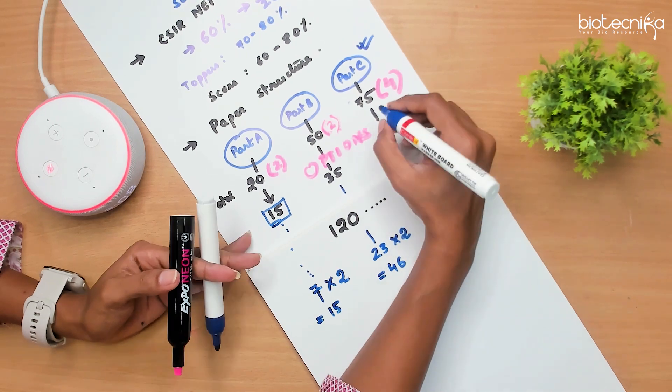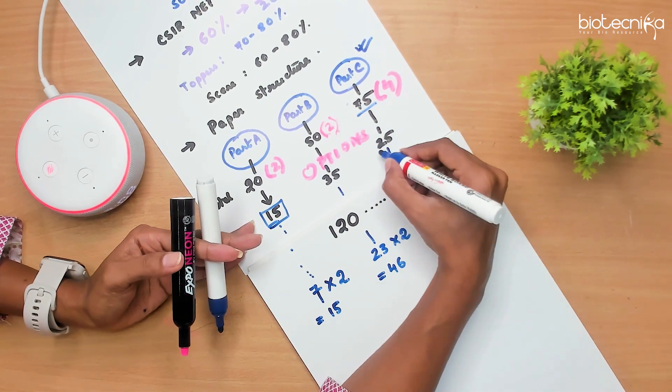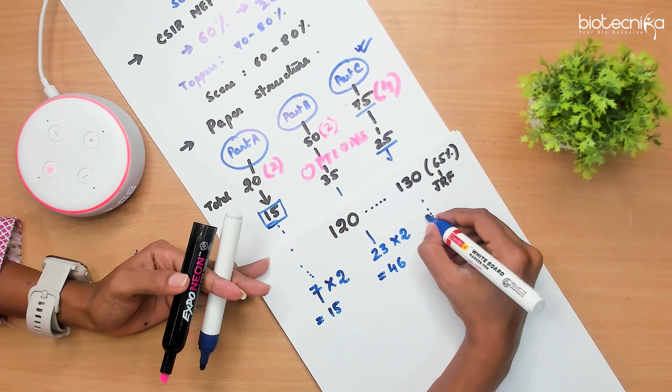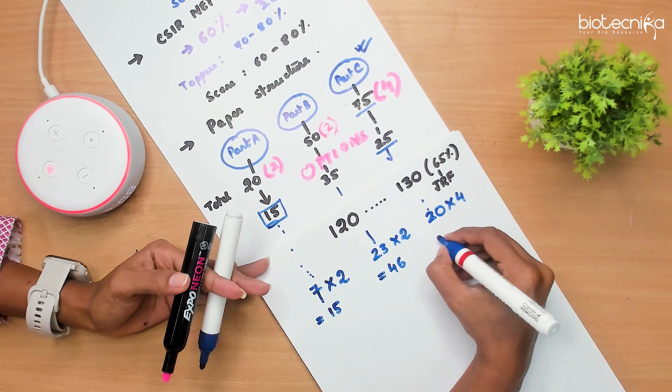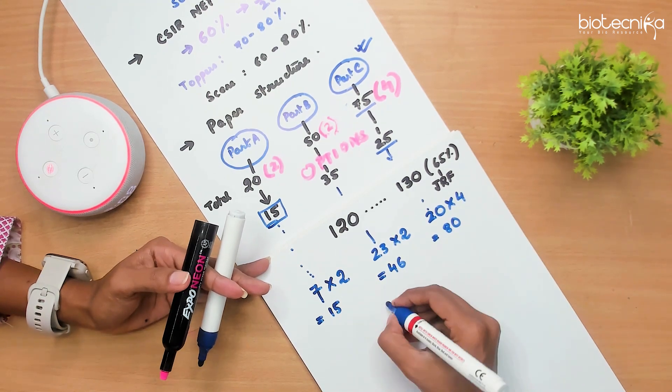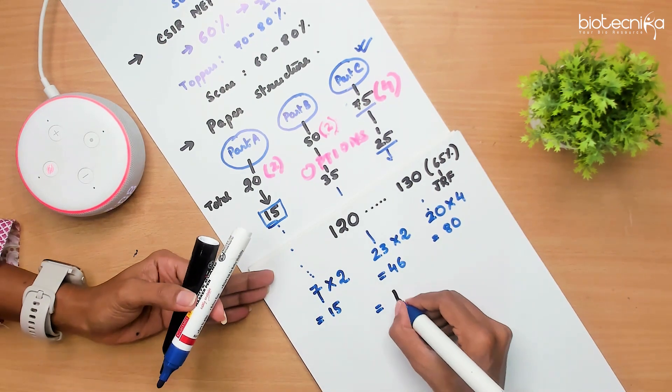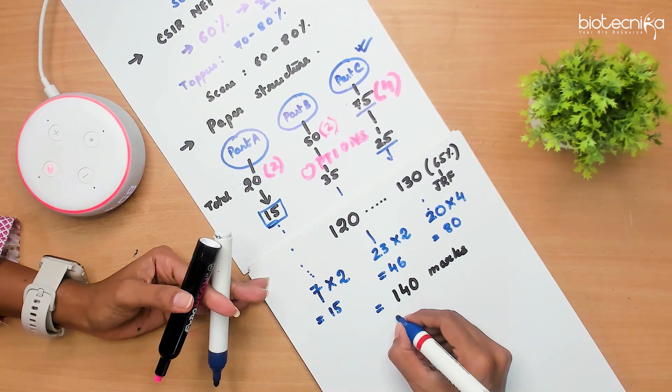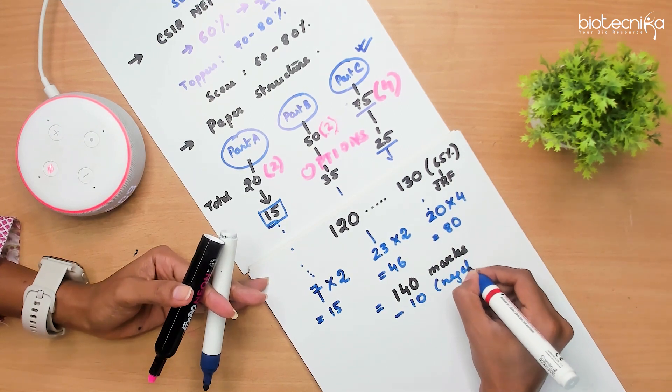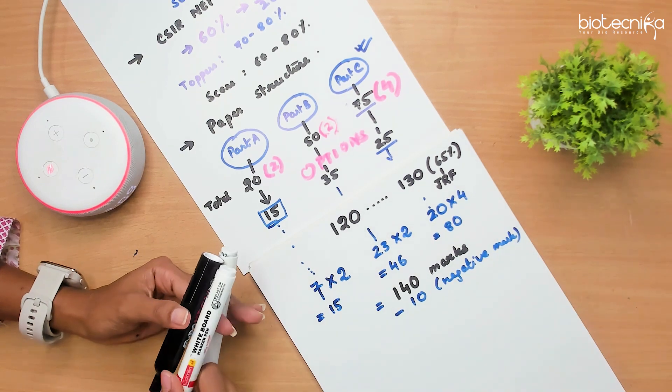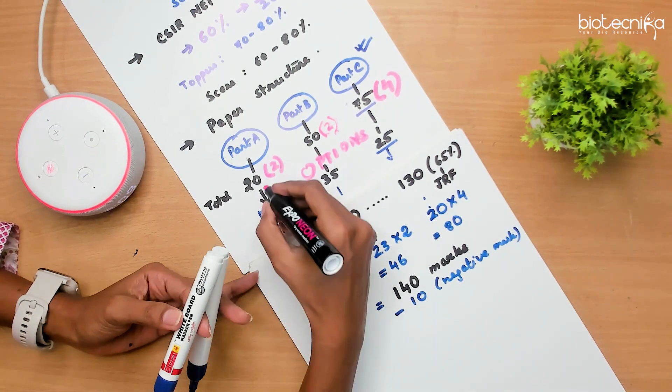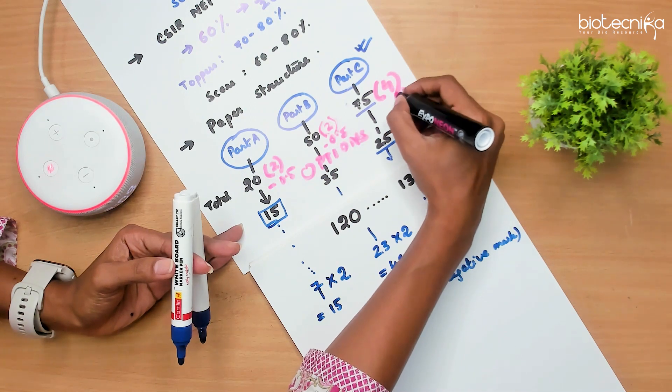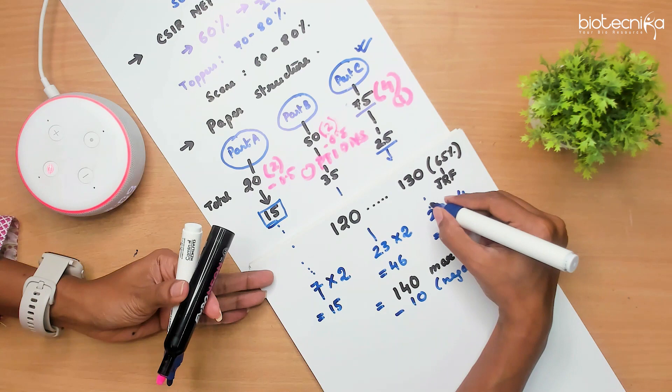And from Part C, already you have lot of choice. You have 75 questions out of which you have to attend only 25 questions. Out of that also, I am not asking you to solve all the questions. Just get 20 questions correctly. So, 20 into 4 is 80 marks. If you add all of them up, the total marks that you get is 140 marks. Now, I will give you the opportunity of making some mistakes, obviously. So, if I subtract some 10 marks that is going in negative marking. For Part A and Part B, you have 0.5 marks deducted for negative marking. So, for every wrong answer, 0.5 will be deducted. Here also 0.5. And for Part C, 1 mark will be deducted.